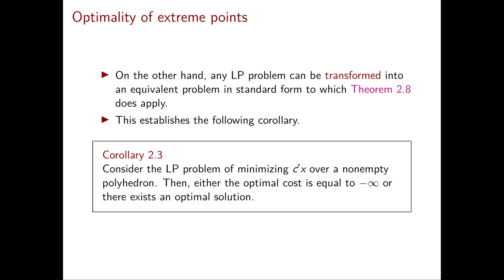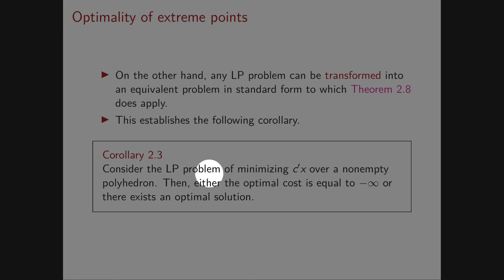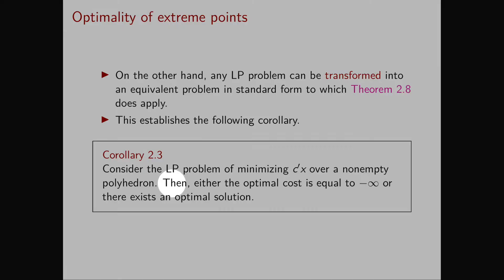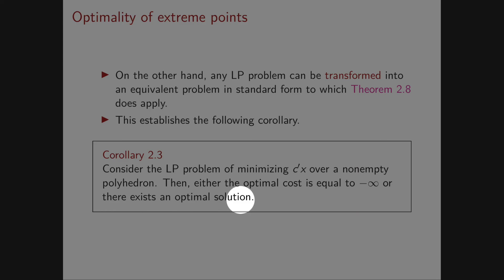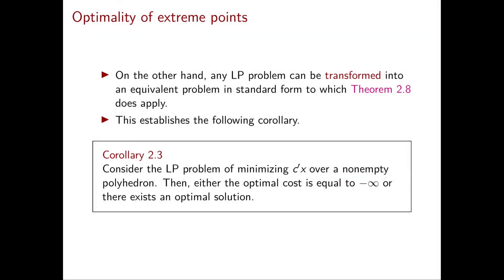This gives us the following corollary of Theorem 2.8, Corollary 2.3. Consider the LP problem of minimizing C transpose X over a non-empty polyhedron. Then either the optimal cost is equal to minus infinity, or there exists an optimal solution. The assumptions of Corollary 2.3 are more general than those of Theorem 2.8 because we are not assuming that P has extreme points. As a consequence, the conclusion is weaker: while we argue that there exists an optimal solution, we cannot argue that an optimal solution will be an extreme point.